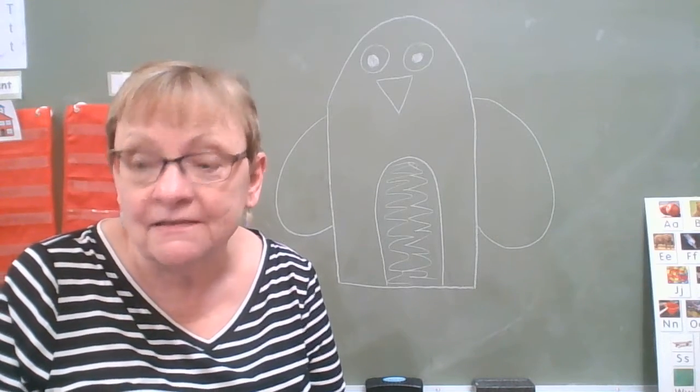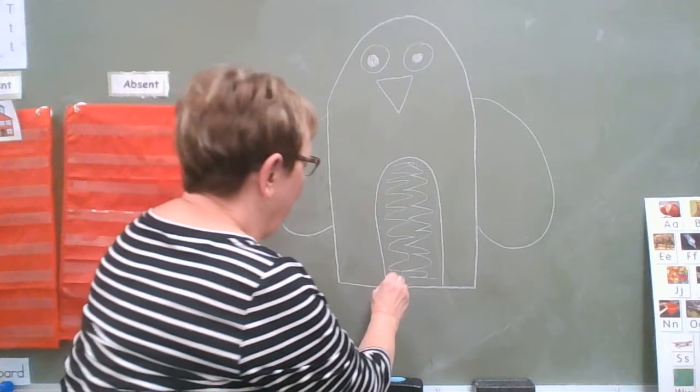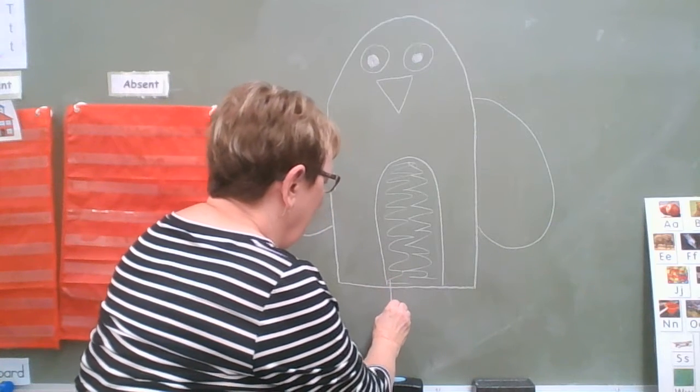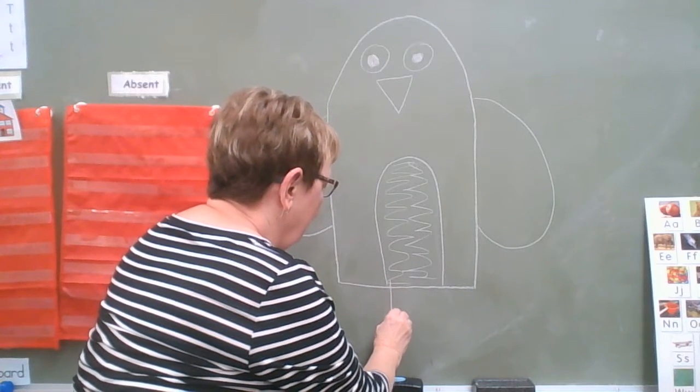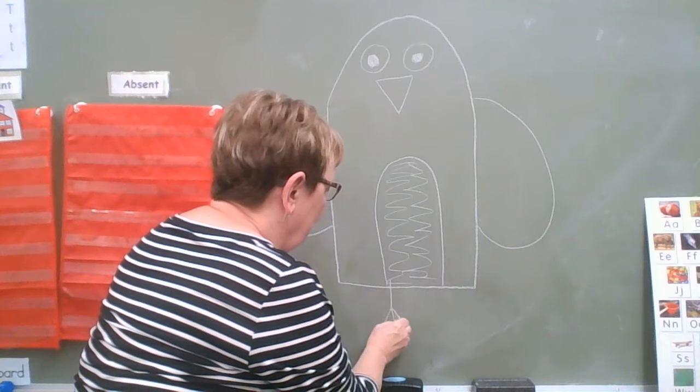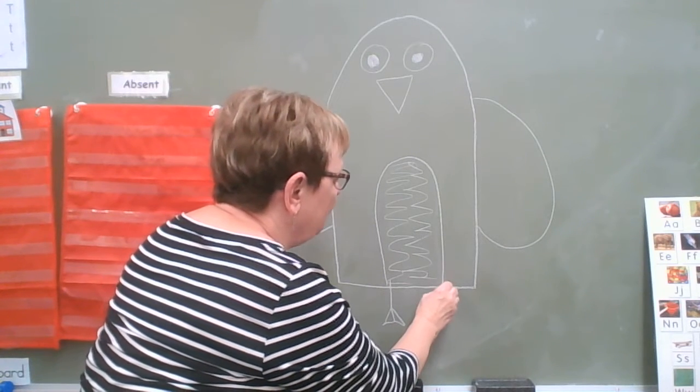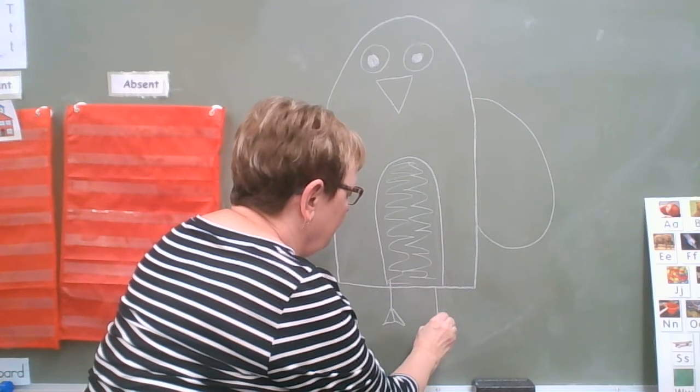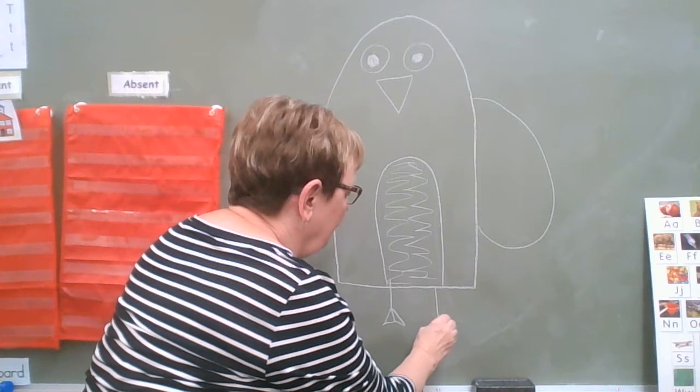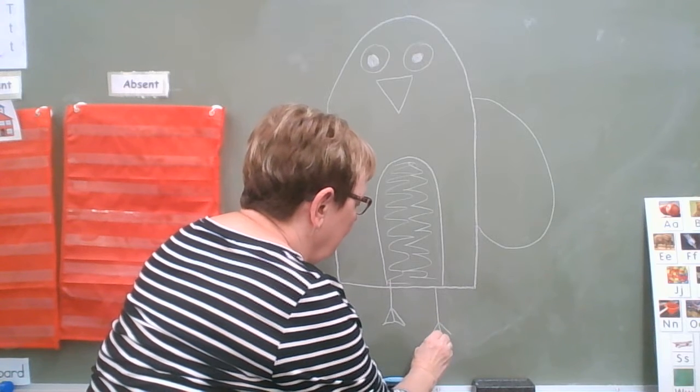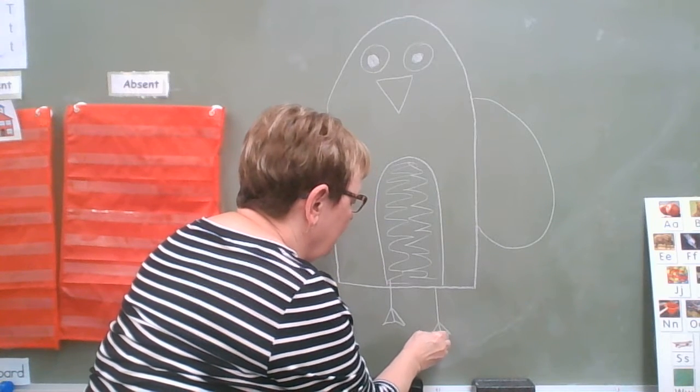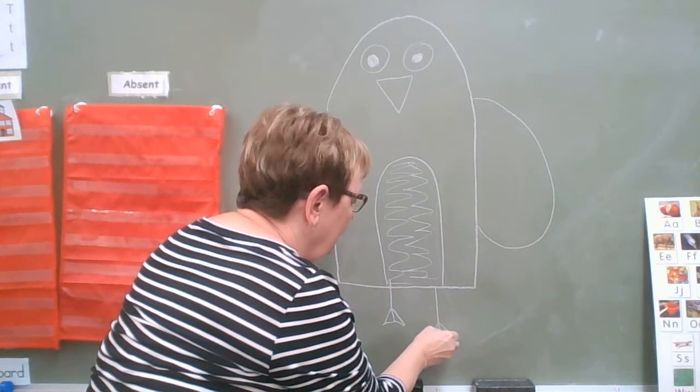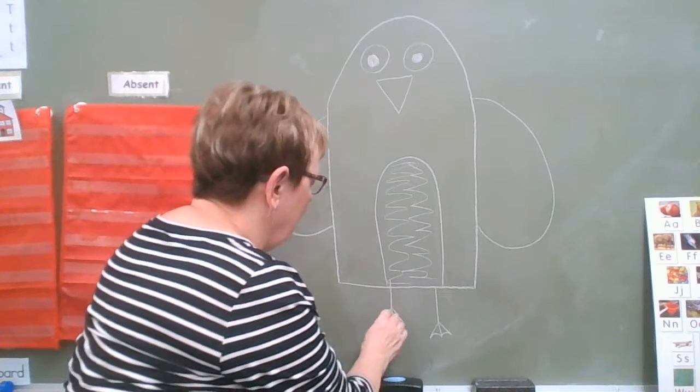Now he needs feet. And he's going to have webbed feet. So I'm going to do this. Those are his webbed feet because he swims, so he needs feet with webs. So I'm going to draw diagonal lines. And then I'm going to do a curvy line, do a curvy line to give him webby feet.